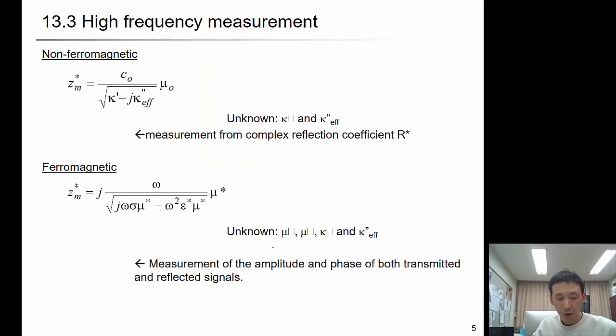For non-ferromagnetic material, if you measure R*, you can get Zm*. From there, kappa prime and kappa double prime can be measured at high frequency. If it's ferromagnetic, then the unknown is a little bit more because you don't know the magnetic permeability of the material.